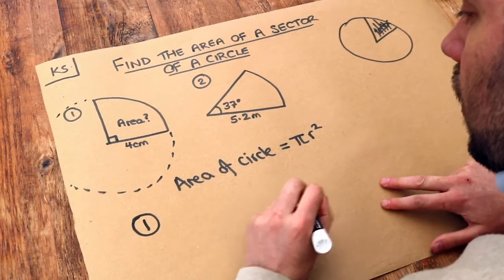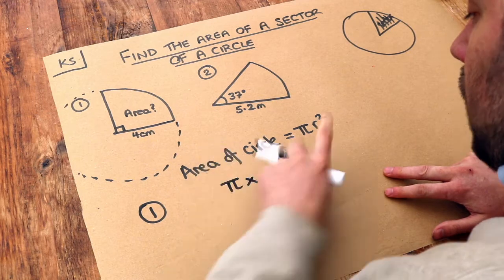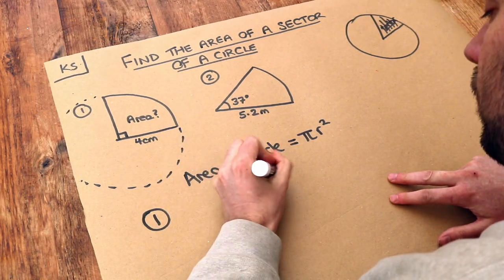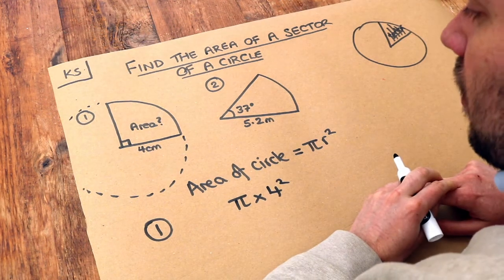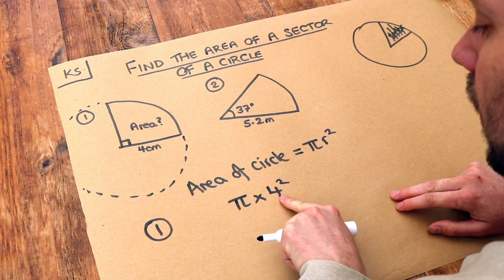So for question one, if we find the area of the whole circle, it's π times the radius squared, four squared. And then what fraction of that circle do we want? Well, we said we have a quarter of it. So we find a quarter of π times four squared.